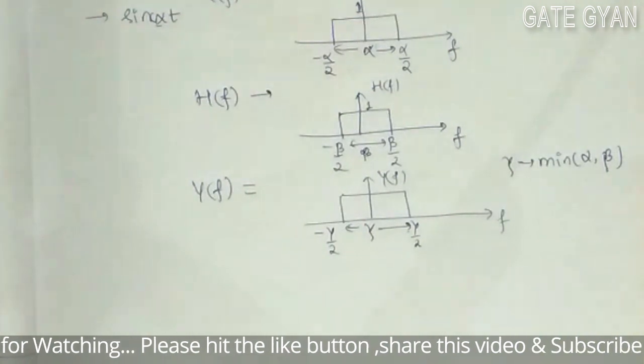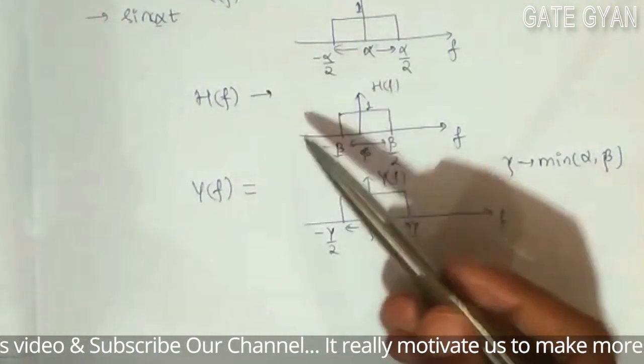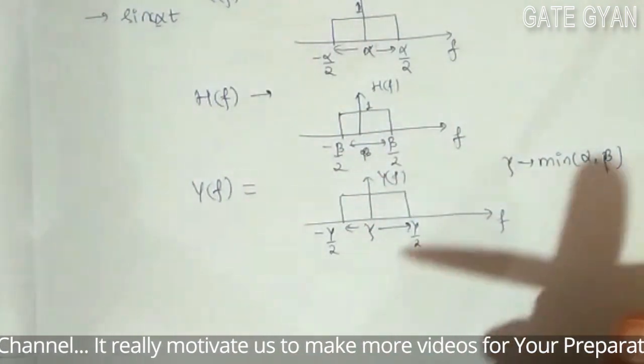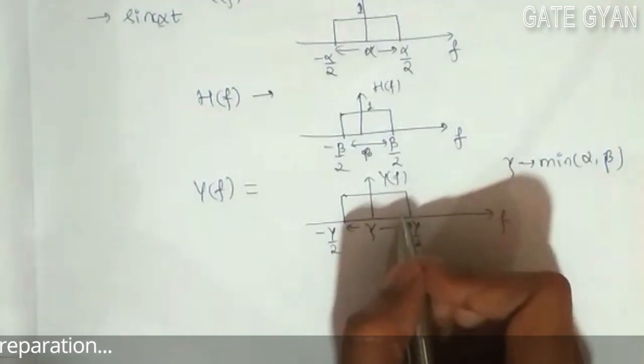So my gamma will be minimum of alpha and beta as it is the multiplication of X(f) and H(f). And again, it's a rectangular pulse from minus gamma by 2 to gamma by 2.